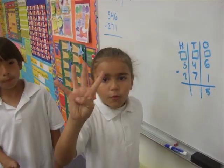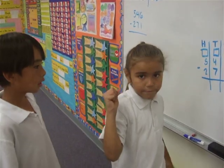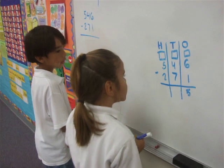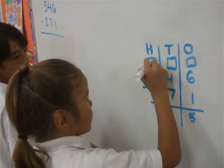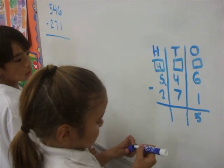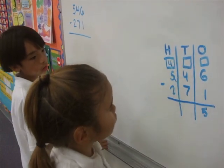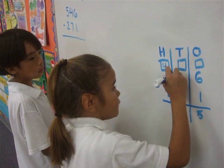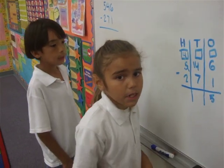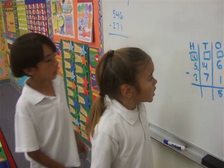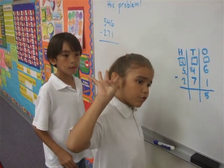Four, we cannot take seven away, so we have to regroup from the five. We put it next to the four, then fourteen minus seven equals seven.